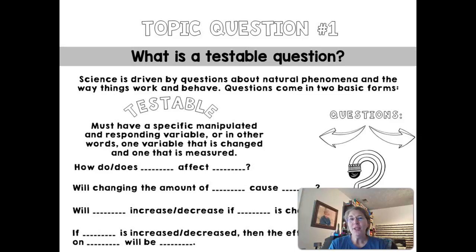So for something to be a science question it has to be what's called falsifiable. And what that means is that we have to be able to prove it false. And so if you read here on this slide it says that science is driven by questions about natural phenomena and the way things work and behave. Questions come in two basic forms. And so in science we look at testable questions.